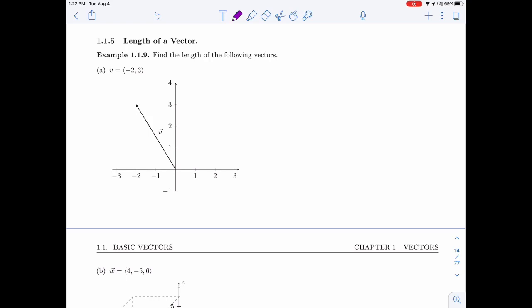So here's a vector V. I've sketched it for you already. It's the vector minus 2, 3. Let me draw this triangle.